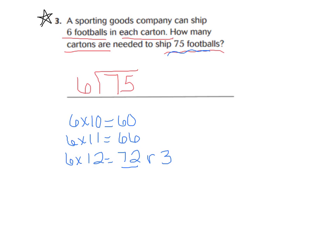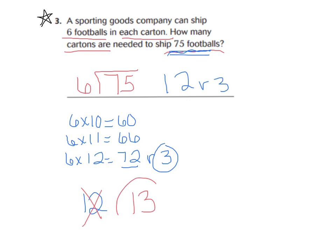So 75 divided by 6 is 12 with a remainder of 3. But we need to ship 75 footballs — this is where interpreting the remainder really comes in handy. I have 3 extra footballs that need to be shipped, so they're going to need to go in their own separate carton. So I'm not going to have 12 cartons — I'm going to have 13 cartons, because those extra 3 footballs need their own container.